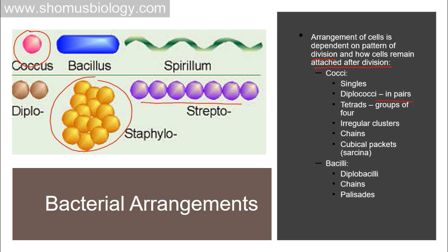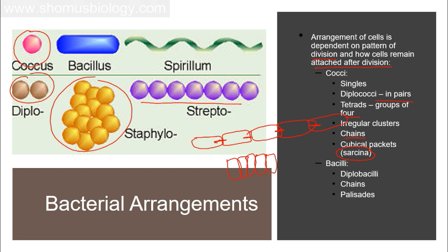Cocci arrangements: single coccus, diplococci in pairs, tetrads of four, irregular clusters as in staphylococci, chains as in streptococci, and cubical packets as in sarcina. For bacilli: diplobacilli are two bacilli connected side by side; chains form when bacilli connect head to head; palisades form when bacilli connect side to side. Head-to-head is the common chain arrangement, while side-to-side is the palisade arrangement.